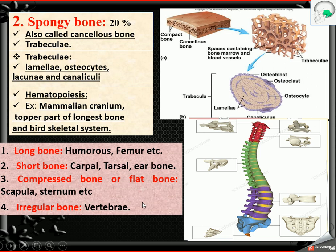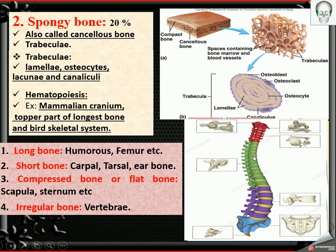Then there is the irregular bone. The vertebral column — this is called vertebrae. Each vertebra has a different shape, that is why it is called irregular bone.